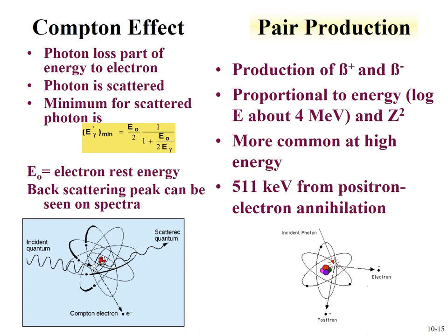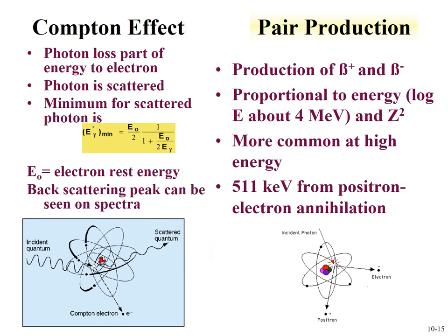The second effect is Compton scattering, where the photon loses only part of its energy to an electron and is scattered. An equation describes the minimum photon energy from a backscattered photon: E_min = 1 / (1 + E_photon / (2 × E₀)), where E₀ is the electron rest energy. In gamma spectroscopy, you can observe both the backscattered peak and the Compton background on a spectrum.